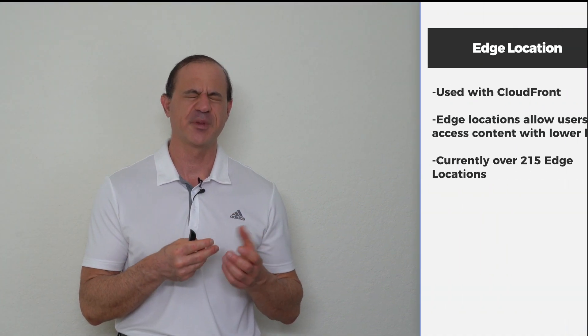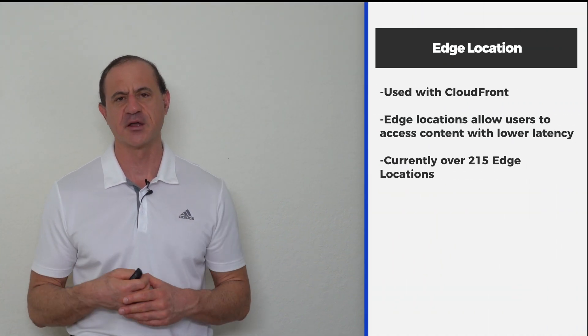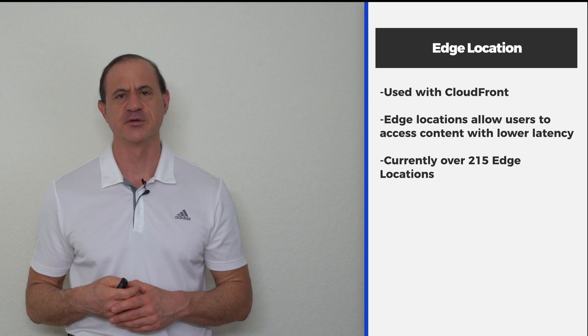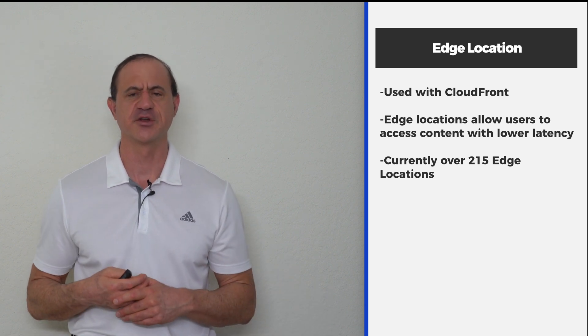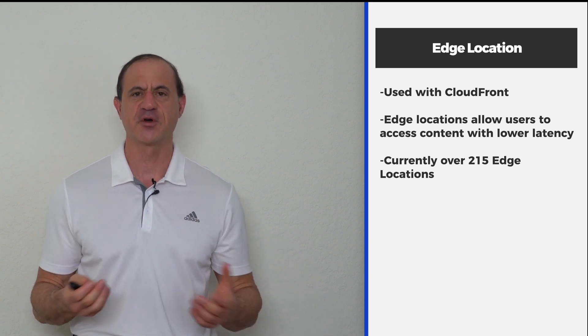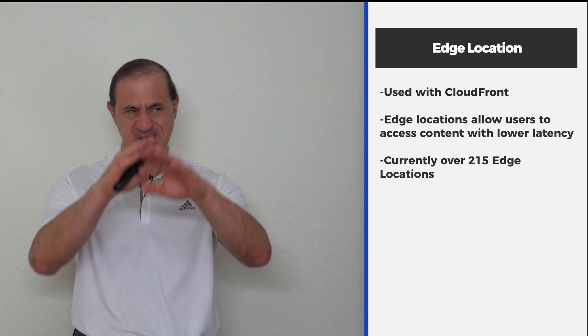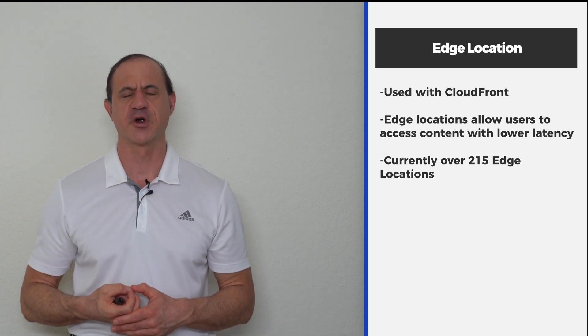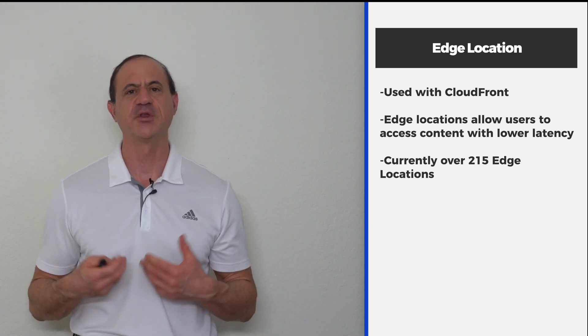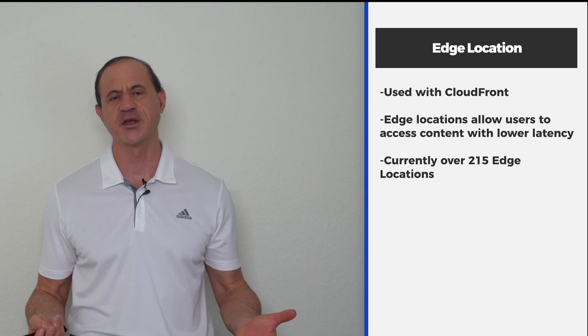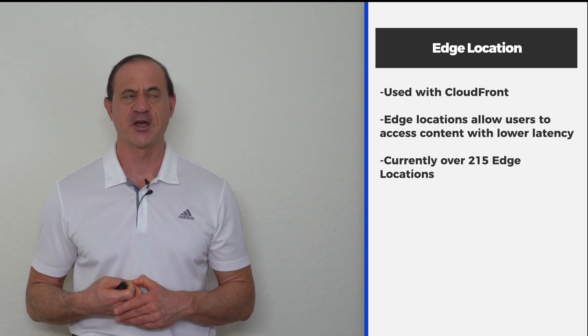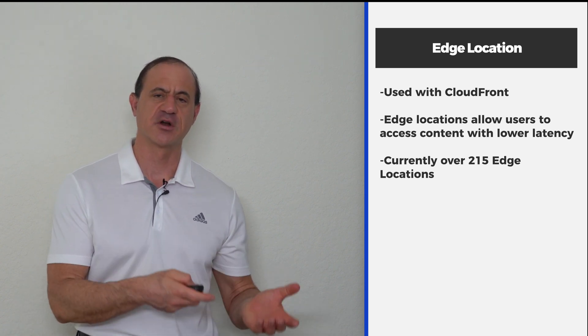Now let's talk about edge locations. At the time of this video, there are about 217 of them. An edge location is basically a place where you can access content closer to you. Edge locations are used with CloudFront — think of your typical content delivery network. Content delivery networks have a high-speed backbone between all of the locations spread throughout the world, and they have these locations in places closer to the user.